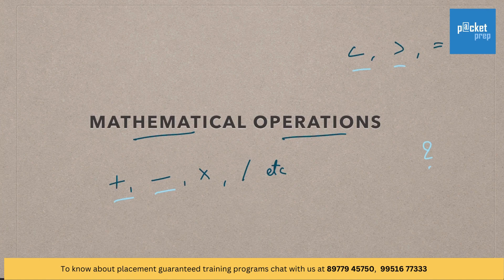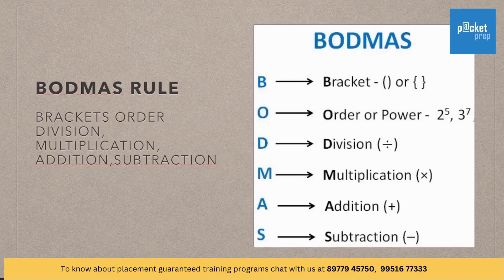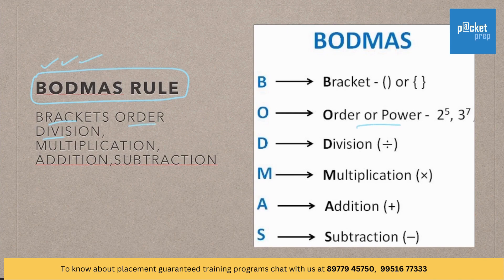But before that, let us understand the BODMAS rule. What is BODMAS rule? Here B means brackets, O means order or power, D means division, M means multiplication, A means addition, S means subtraction.